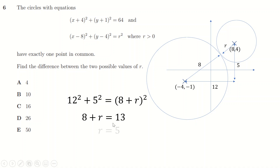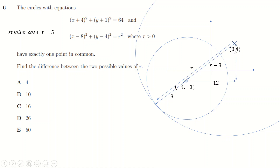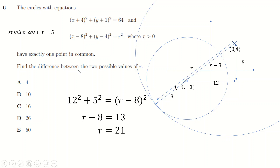In the larger case the smaller circle is internally tangent inside the larger: the distance r - 8 forms the hypotenuse side, and by the same 5-12-13 triangle, r - 8 = 13, giving r = 21. The difference between the two cases is 21 - 5 = 16.